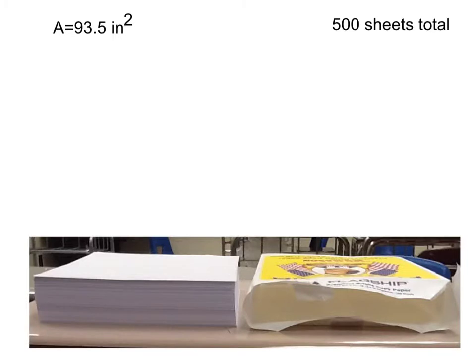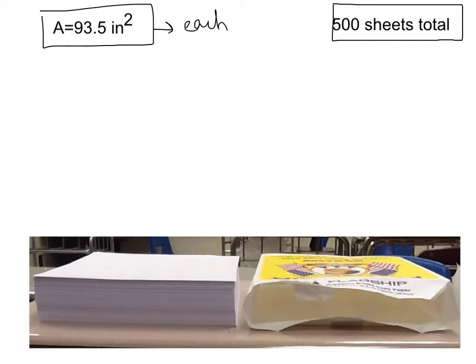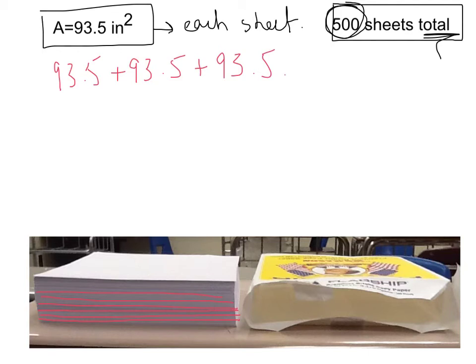Now, the question is, how can these two pieces of information help us solve for the total volume of this pack of paper? Well, when we realize that each sheet has the area of 93.5 inches squared, and there are a total of 500 sheets in the pack, the total volume is the addition of all these sheets. So we're taking 93.5, and adding another 93.5, and adding another 93.5, doing the same calculation 500 times.